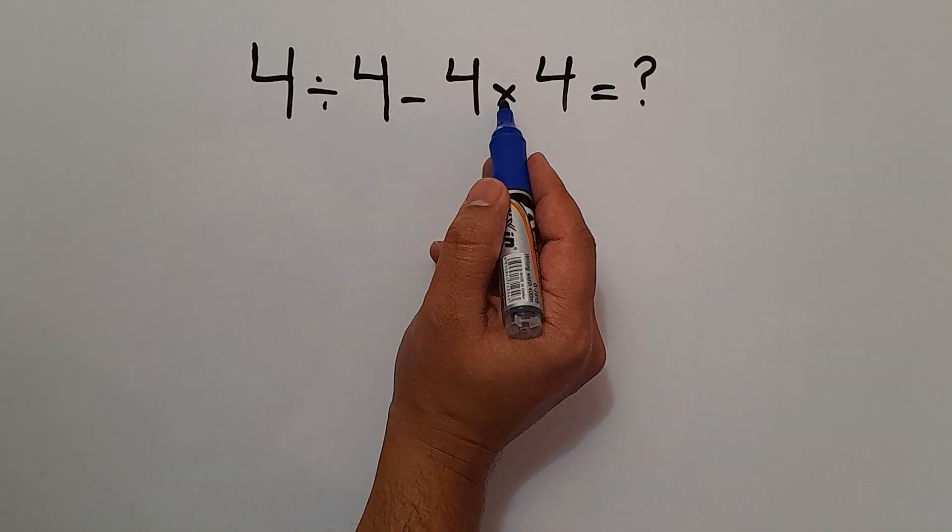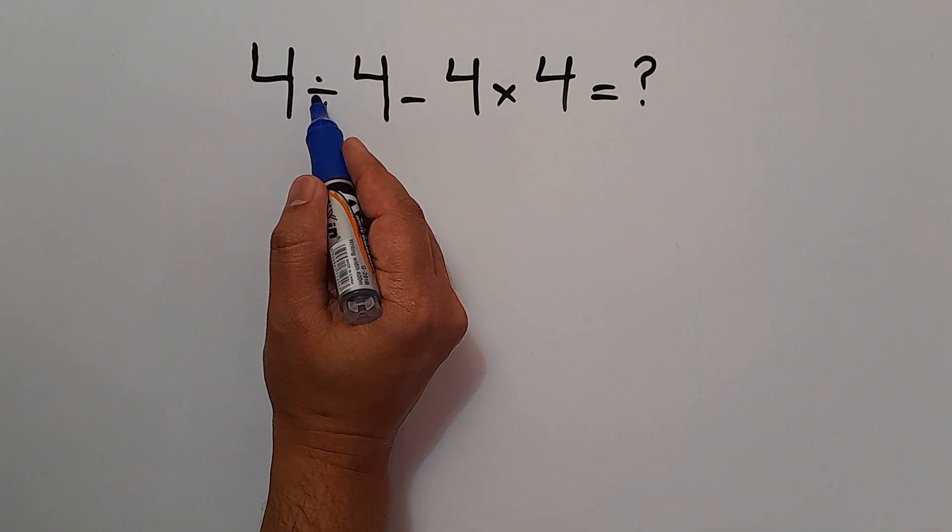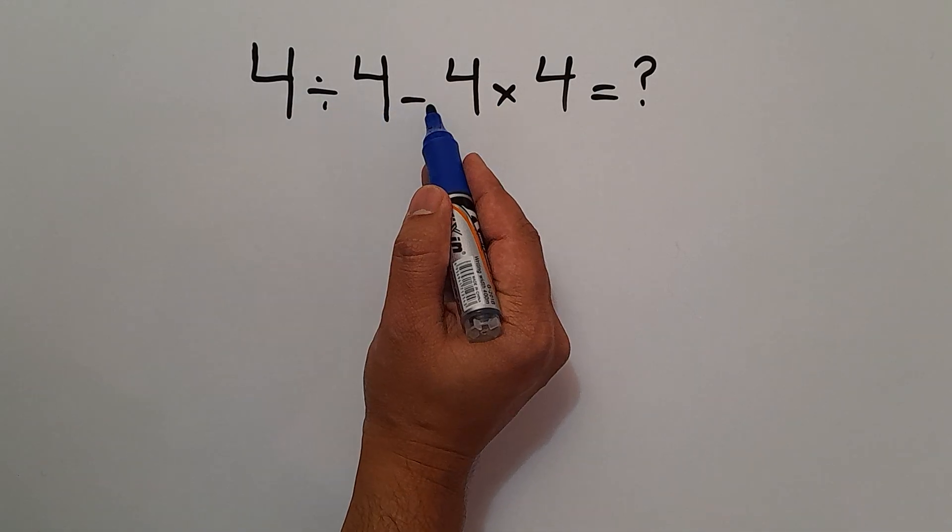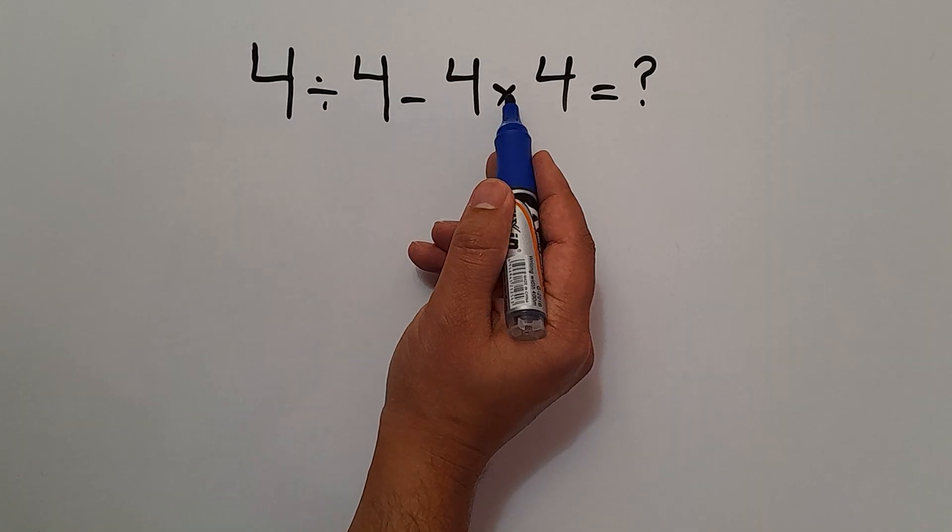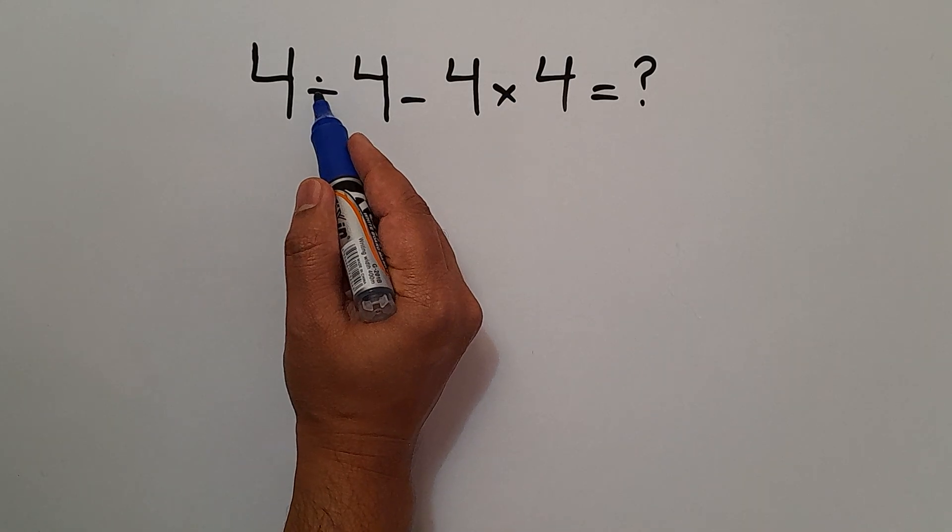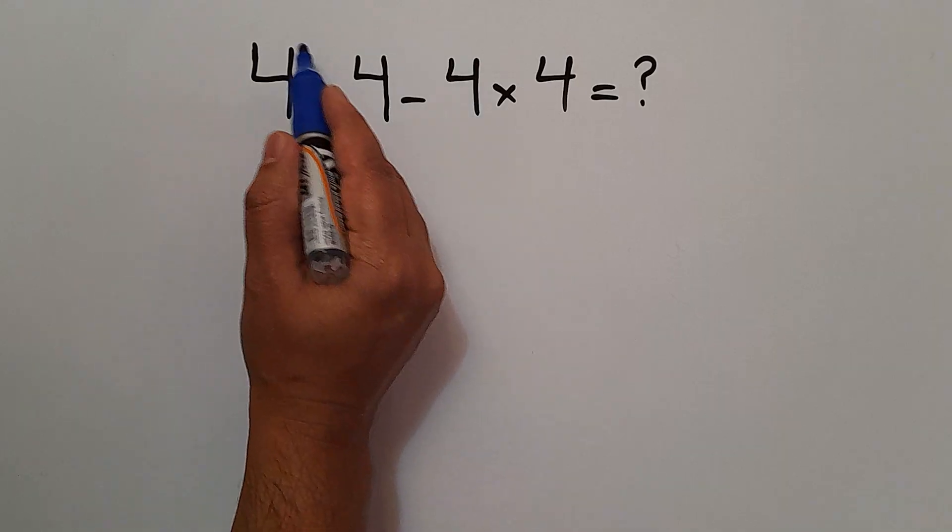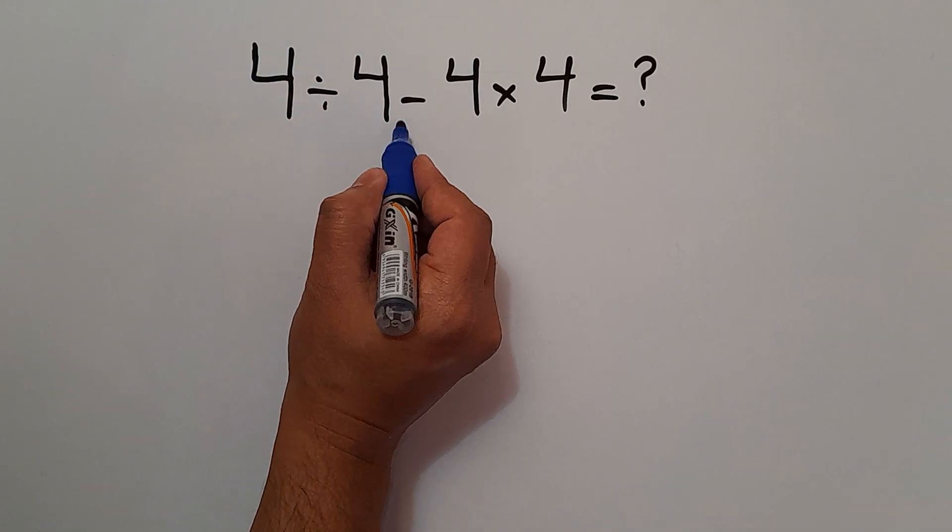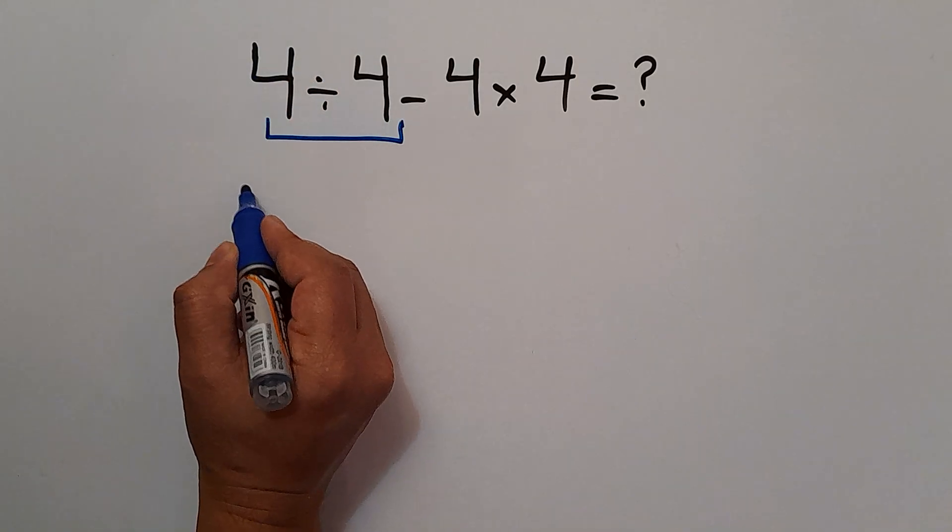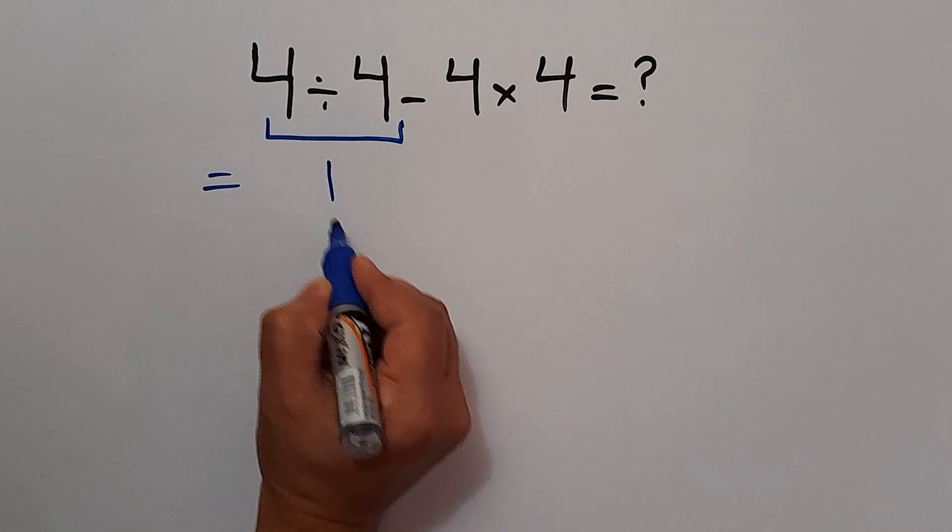As we know, multiplication and division have higher priority than subtraction. And also, multiplication and division have equal priority and we have to work from left to right. So first we do this division. 4 divided by 4 equals 1.